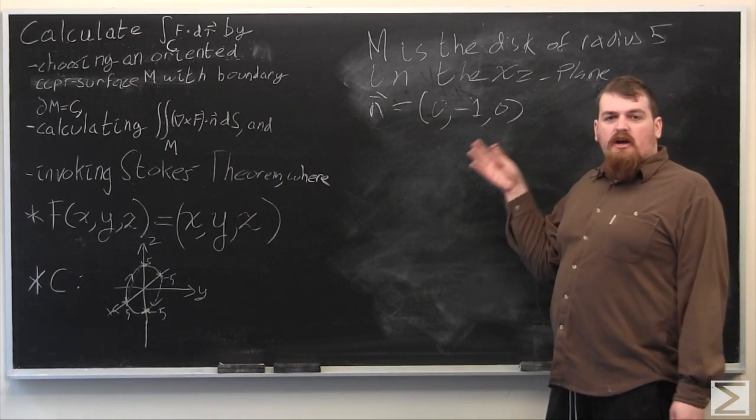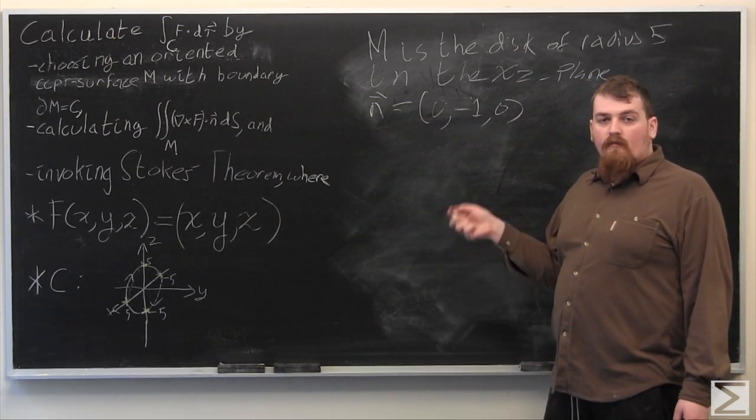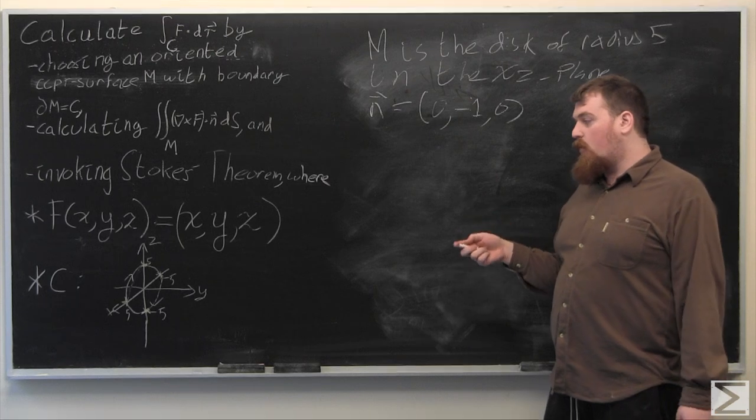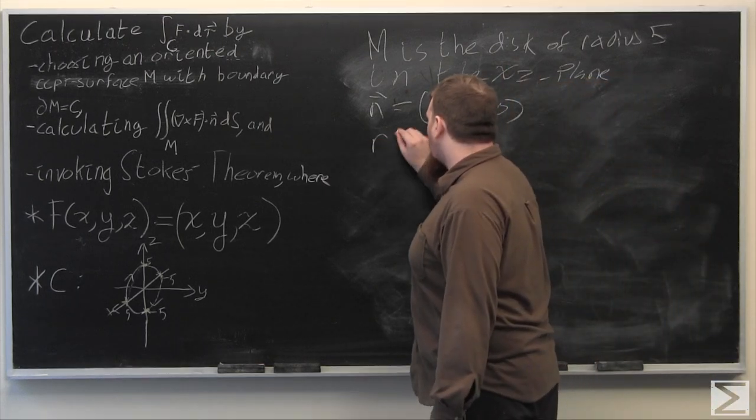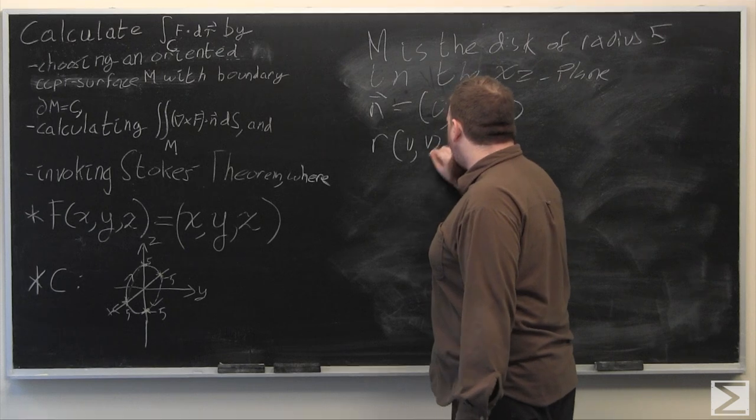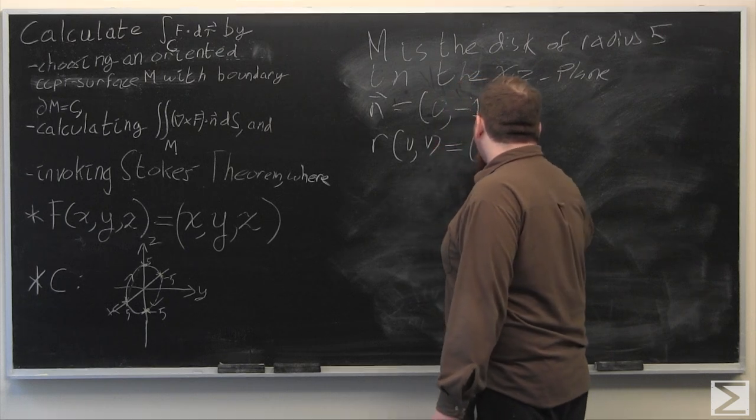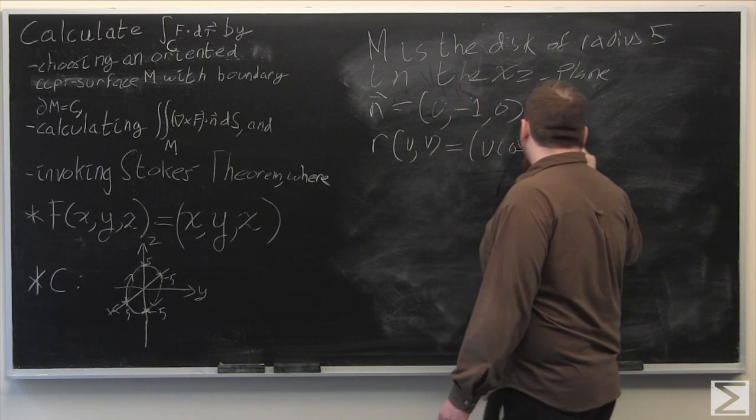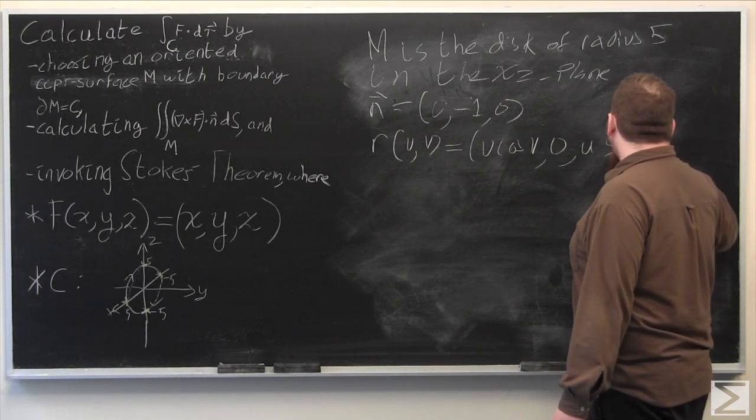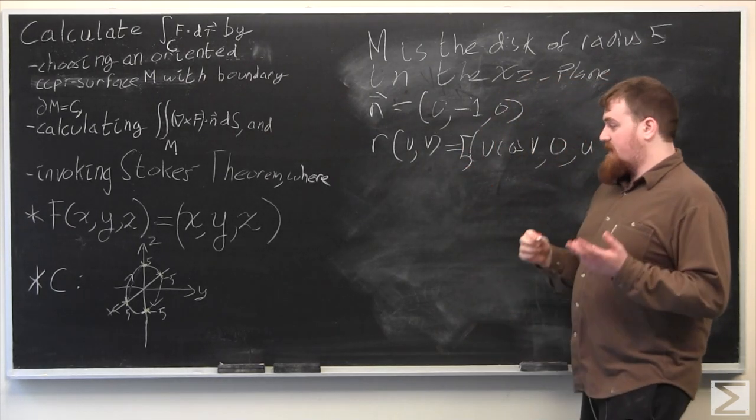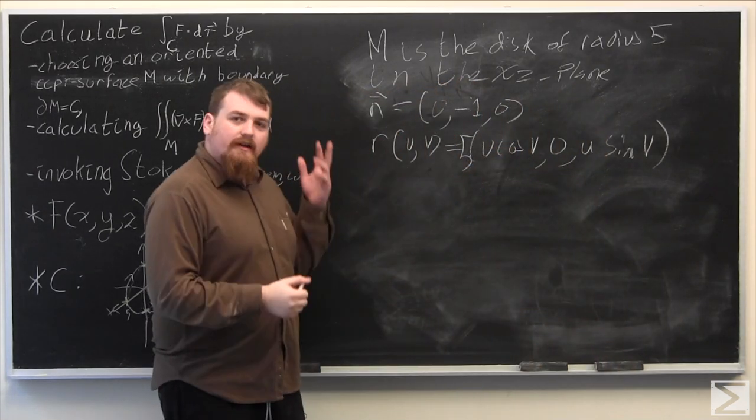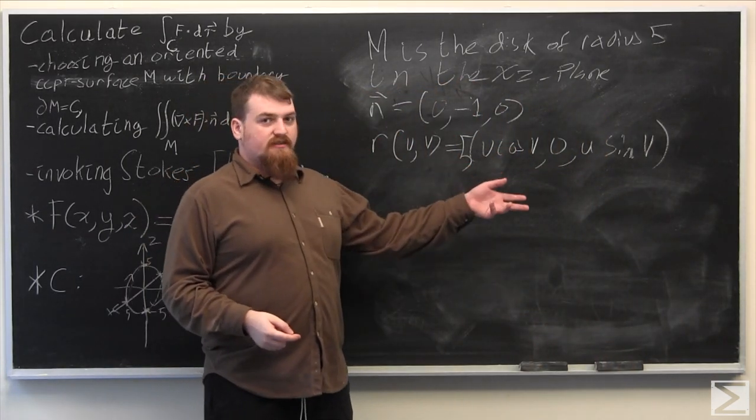Of course, we could go on by defining a parametrization for m itself. This would probably be something of the form like r of u v equals u cos v 0 u sine v, since it's in the x, z plane, and multiply 5, since it's the disk radius 5. However, it turns out we're not actually going to need to do this.